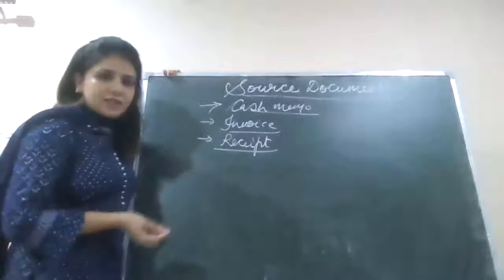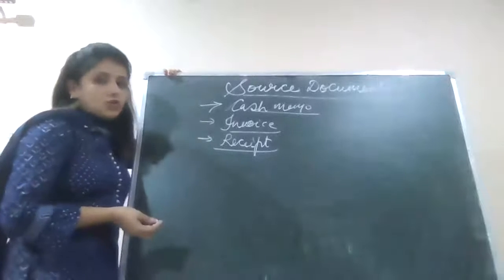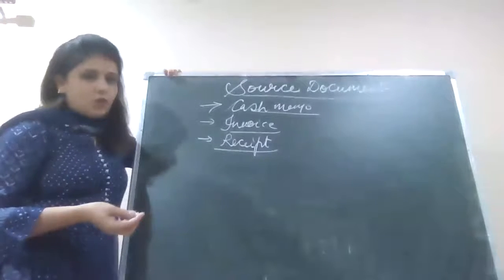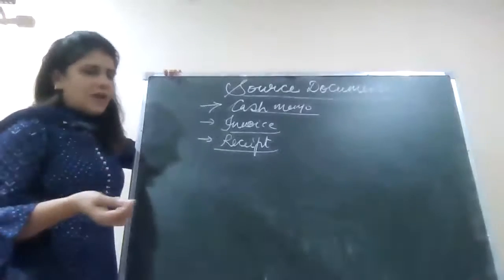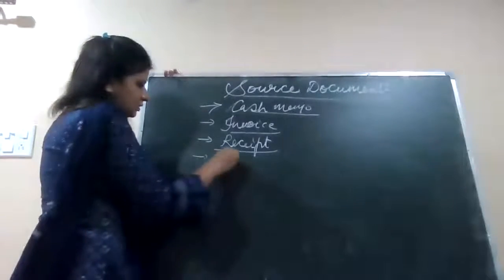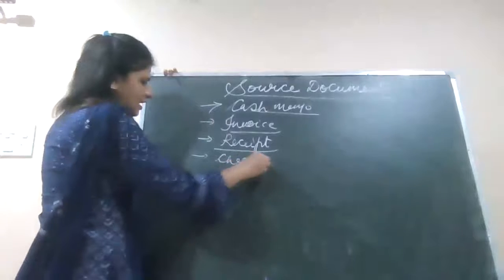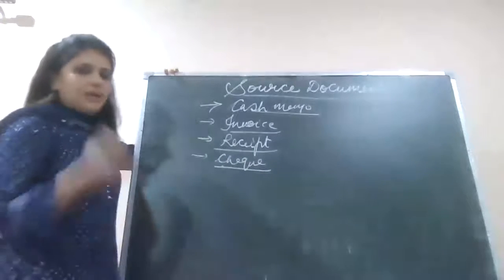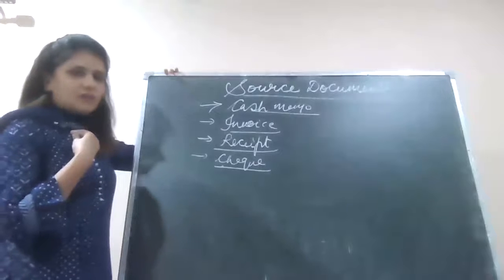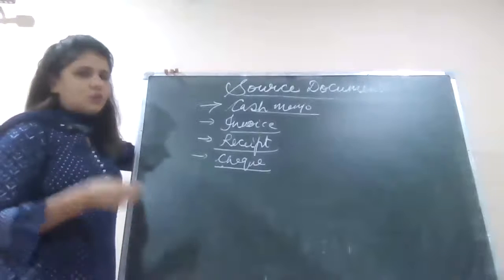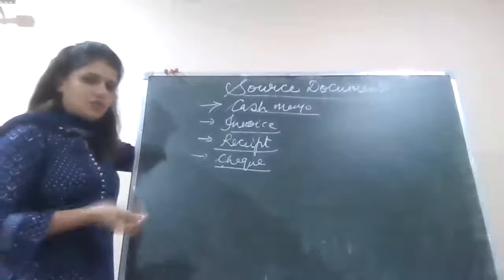Receipt is a source document for you because it is coming from some outside party, from some outside source. Then ultimately yesterday we wrapped up our lecture with check. Check is basically an order being made by me as a client of the bank to pay a certain sum of money at a specified time period to a certain person whose name is being written on the face of the check.